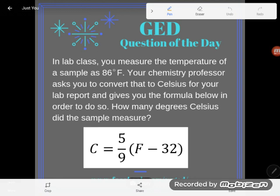So let's take a look. It says in lab class you measure the temperature of a sample as 86 degrees Fahrenheit. Your chemistry professor asks you to convert that to Celsius for your lab report and gives you the formula below in order to do so. How many degrees Celsius did the sample measure?